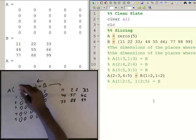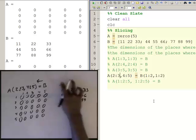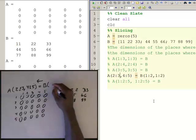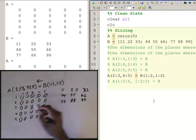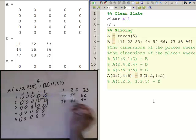I'm looking at 2 colon 3 comma 4 colon 5 for A, and B I'm taking 1 colon 2 comma 1 colon 2. So let's see, the intersection of 2, 3 with 4 and 5 is over here. Rows 2 and 3 intersect with columns 4 and 5 over here.